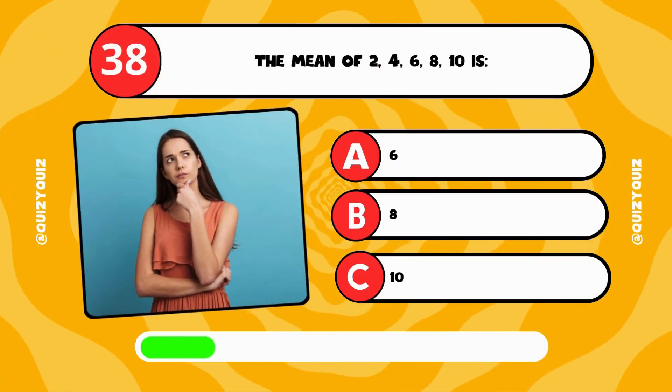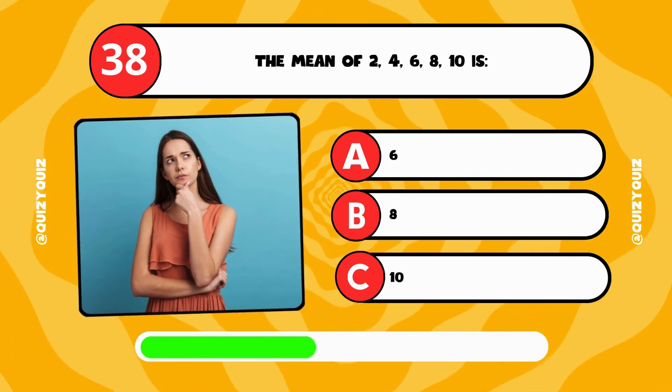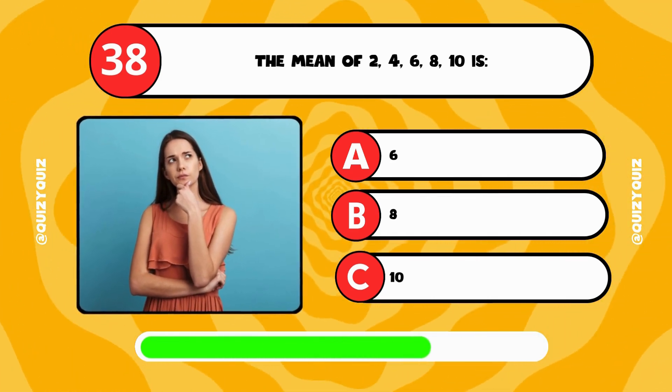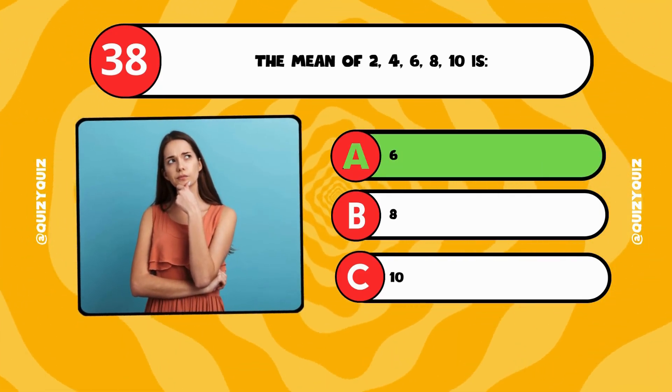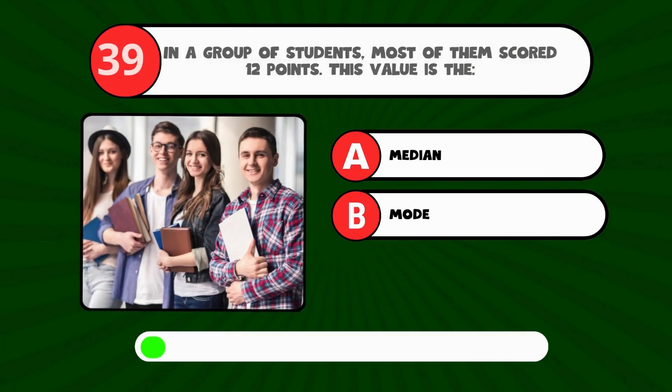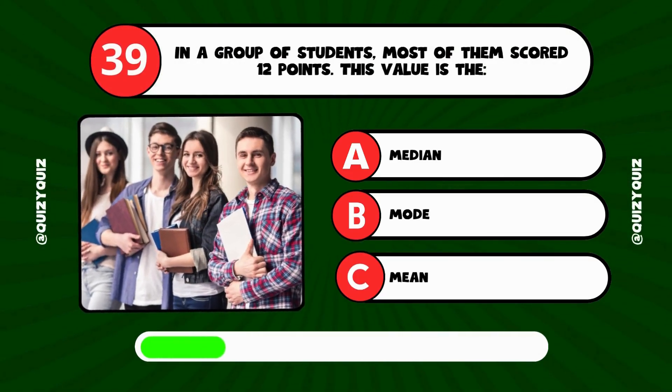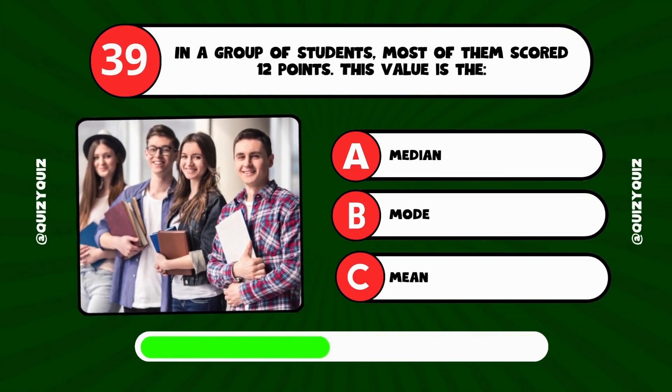The mean of 2, 4, 6, 8, 10 is. In a group of students, most of them scored 12 points. This value is the